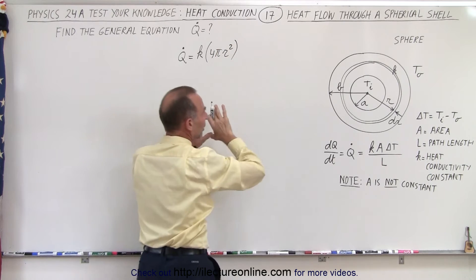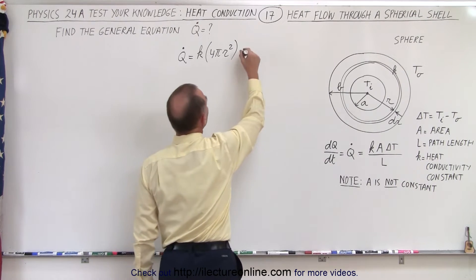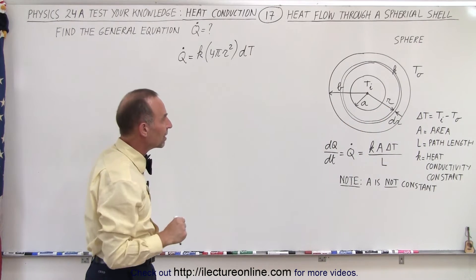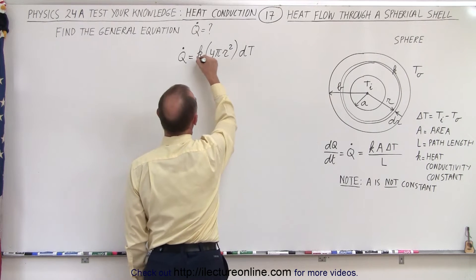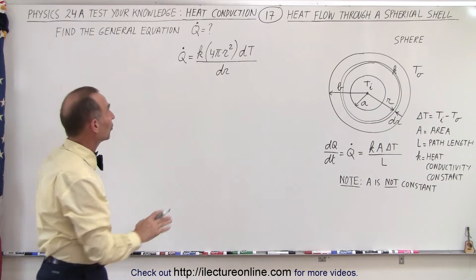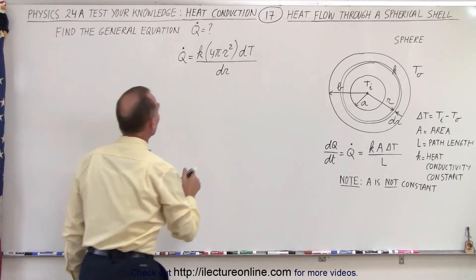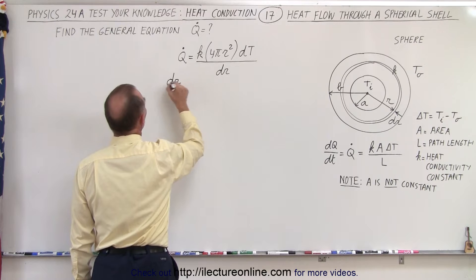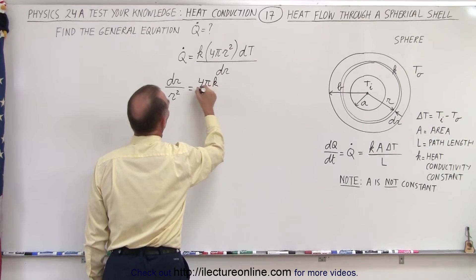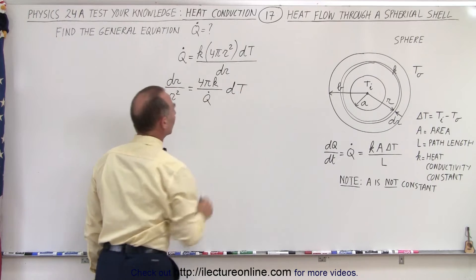That surface area gets bigger as R gets bigger. The change in temperature across the thin shell is dT, and L is going to be dr, so we divide the whole thing by dr. Now we have two variables — Q dot is a constant, but R and T are the two variables — so we have to separate the variables, which means we write it as: dr divided by R squared equals 4πK over Q dot times dT.